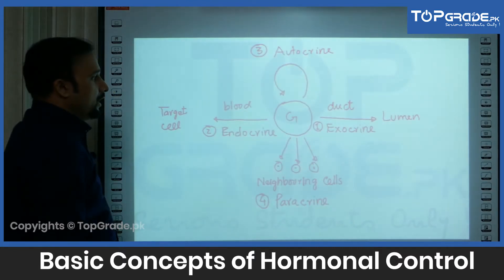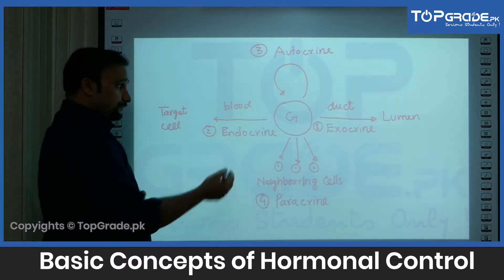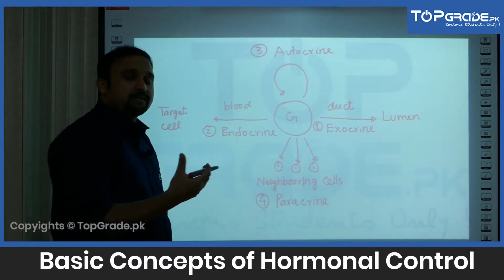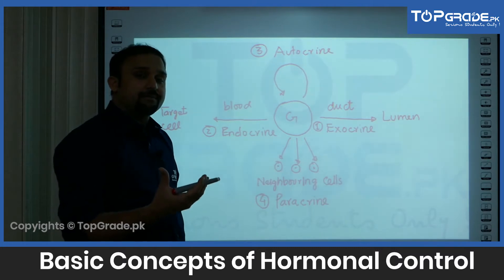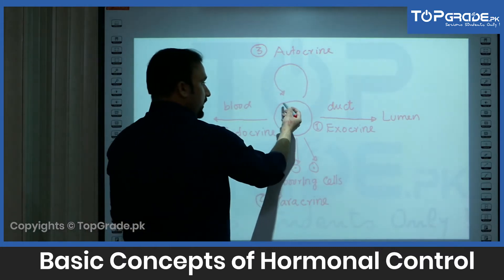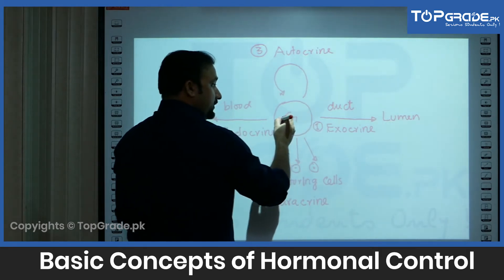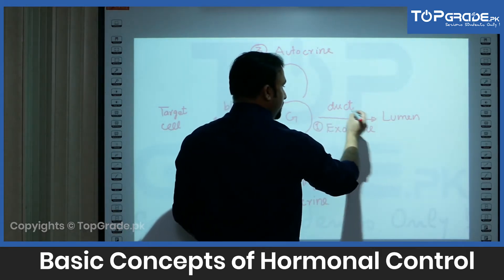In the endocrine system, there are glandular cells. There are several types of glandular cells. For example, we have exocrine glands — these are glands that secrete through a duct into a lumen.